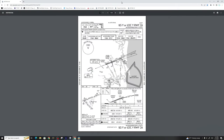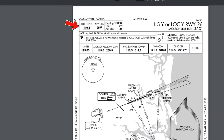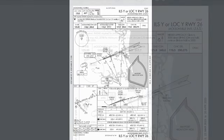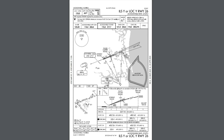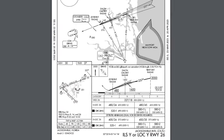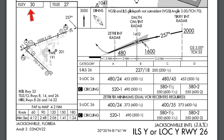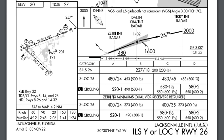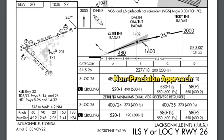Let's take a look at the ILS Yankee approach for runway 26 at Jacksonville. On the top left, we have the localizer of 110.3. Notice we do not have a channel number under that, so it will not have DME information associated with this localizer - we went over this in part one. Now let's take a look at the bottom of this approach plate. Over here on the left-hand side, we have a runway elevation of 30 feet. Looking at the lower right-hand side, we have an ILS approach, a localizer approach, and also a circling approach. The ILS approach is going to be a precision approach, while the localizer approach is going to be a non-precision approach, so your decision altitudes are going to be a little bit different.